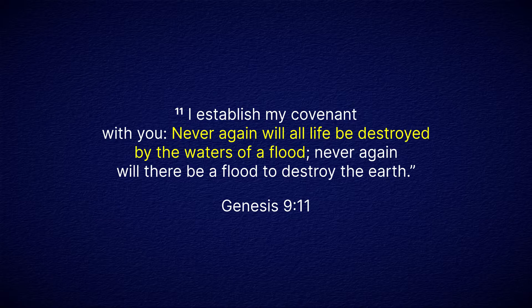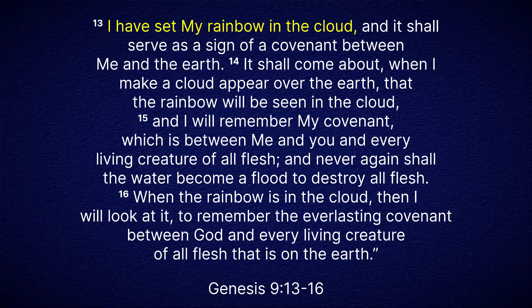God then gives Noah a sign by which to remember this covenant in Genesis 9, verses 13 through 16. We'll read from the New American Standard Bible, since it's a very literal or word-for-word translation, and we'll see that the words here are particularly important. Here's how this passage reads. God says, "I have set my rainbow in the cloud, and it shall serve as a sign of a covenant between me and the earth."